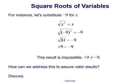The square root of 81 is the principal square root — it's positive 9. And that equals negative 9? This result is impossible. Positive 9 does not equal negative 9.